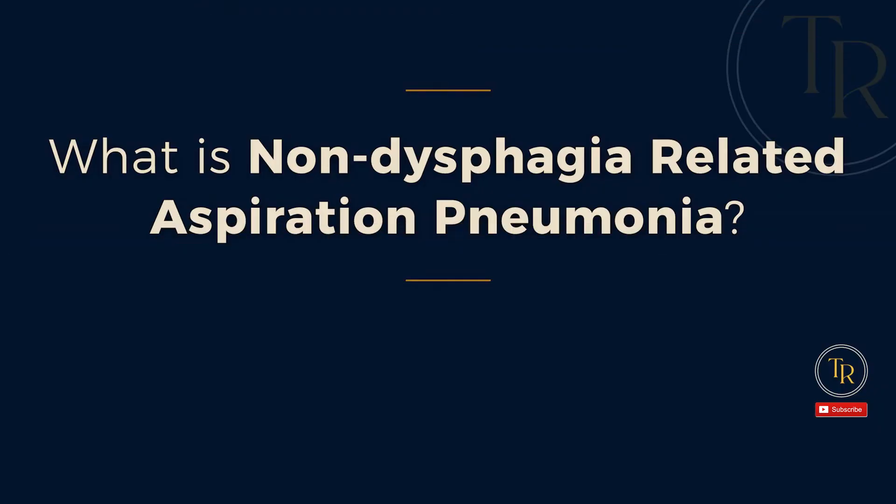Now, what is non-dysphagia-related aspiration pneumonia? While it's still pneumonia related to aspiration, dysphagia was not the cause of that aspiration. For example, aspiration of reflux — especially if the patient is taking acid-suppressing drugs — allows swallowed oral pathogens to thrive, and once those oral pathogens are refluxed and aspirated into the lungs, it can cause non-dysphagia-related aspiration pneumonia. Other examples include an isolated choking event without symptoms of oropharyngeal dysphagia, or aspiration of vomit, which you may see more in a cardiac arrest case.